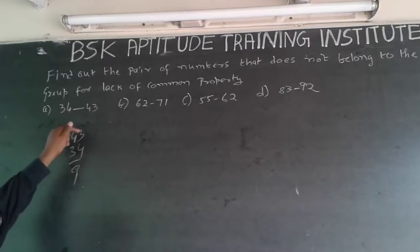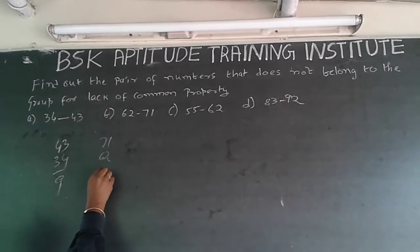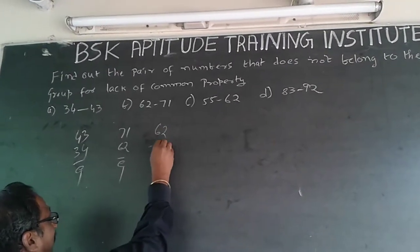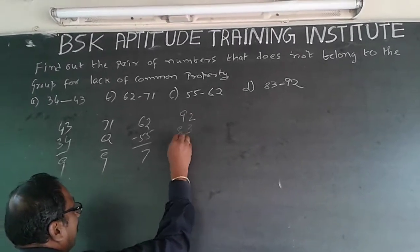Don't try to compare each number. 43 minus 34 will be 9. Here, 71 minus 62 will be 9 again. And 62 minus 55 will be 7. And 92 minus 83 will be 9 again.